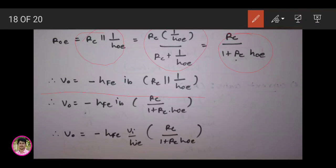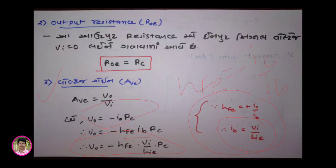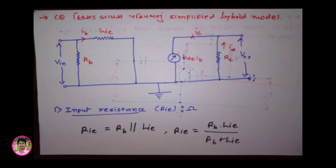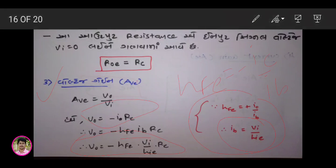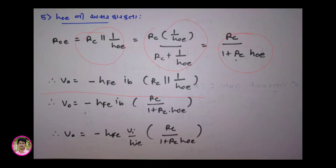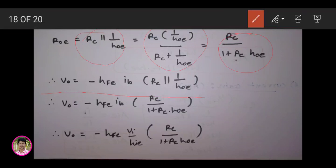V0 is the output voltage. In the output, V0 is equal to minus hfe × Vi upon hi × RC. RC upon 1 plus RC — hoe is the output admittance. IB × RC, 1 upon hoe. IB is equal to Vi upon hi.